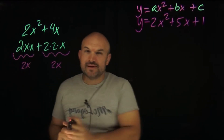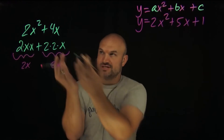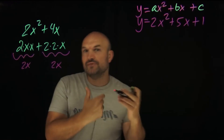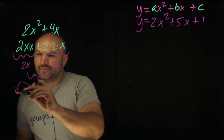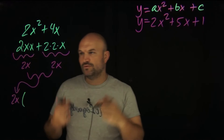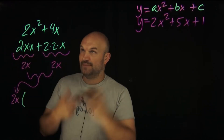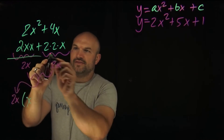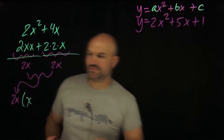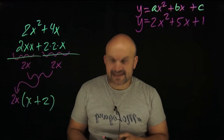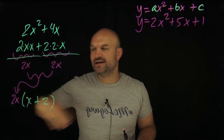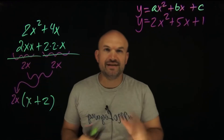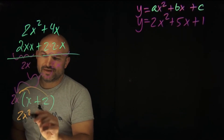Factoring is rewriting this addition expression as a product. To rewrite as a product, you divide out the common factor 2x and rewrite it as a multiplication problem. Combining them outside the parentheses: if I divide 2x squared by 2x I get x, and if I divide 4x by 2x I get positive 2. So the result is 2x times (x + 2). You can always check by multiplying back out: 2x times x is 2x squared, and 2x times 2 is 4x. Correct.